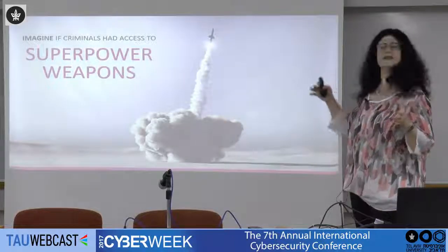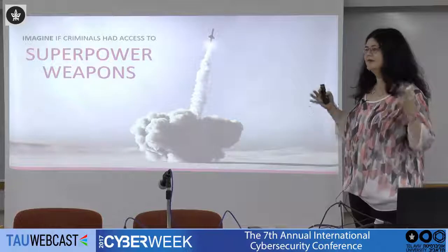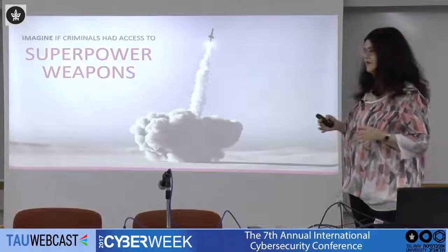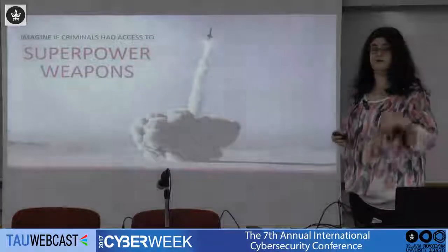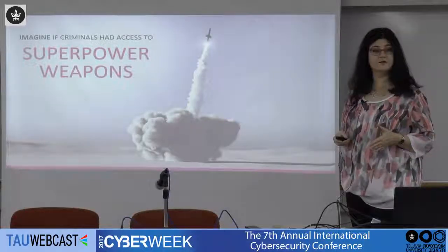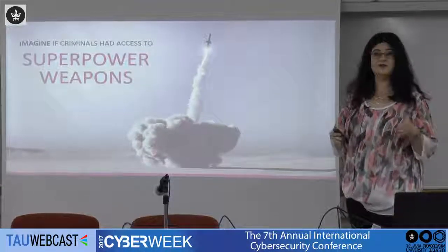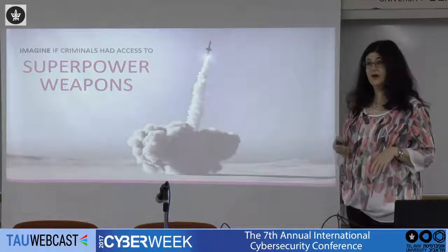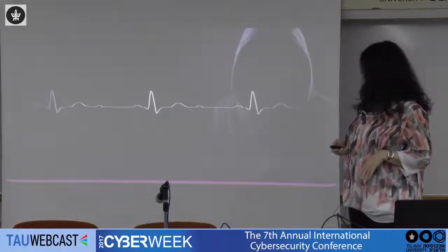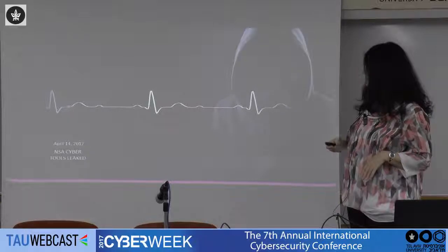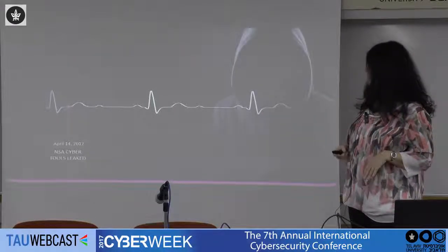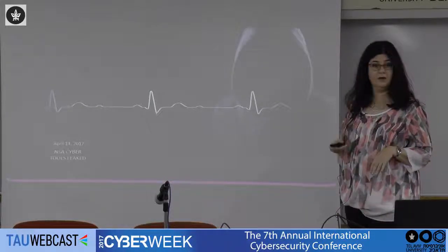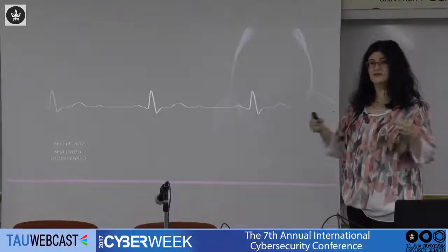Let's start with something general. Imagine a world where criminals would have access to superpower weapons — a criminal with access to a nuclear bomb, to missiles, to all sorts of things. In the real world, criminals do not have access to superpower weapons, so we're not that afraid about the damage they can do. But in the cyber world, they actually do. Two months ago, NSA cyber tools were leaked — very strong, powerful, superpower weapons. We don't tend to think of it that way because it's just pieces of code, but really, these are weapons.